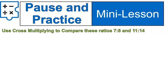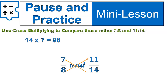Pause and practice. I want you to use cross-multiplying to compare these ratios 7 to 8 and 11 to 14. With this one, you'll have one extra step of writing them out in fraction form. All right. Here they are in fraction form. We're going to do some cross-multiplying: 14 times 7, 8 times 11. And we can simply compare 98 is greater than 88. Therefore, 7 eighths is greater than 11 fourteenths.